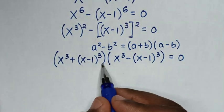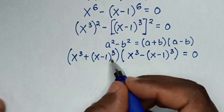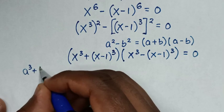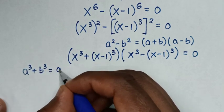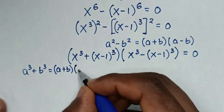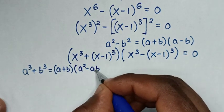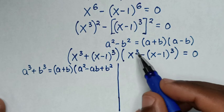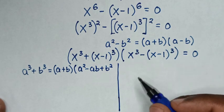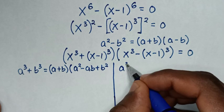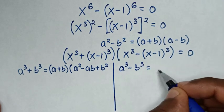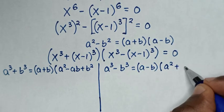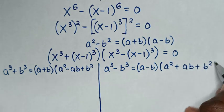The first factor is in the form of a sum of cubes with power of 3 and addition, so we apply a³ plus b³. The second factor is a difference of cubes, so we apply a³ minus b³ equals (a minus b)(a² plus ab plus b²).